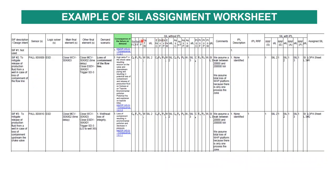The SIL assessment worksheet shows the sensor, logic solver, and final elements. The demand scenario comes from HAZOP. You put the risk graph here, input the consequences — whether disaster or catastrophic — exposure, whether avoidance is possible, the demand rate, and you arrive at a SIL. The same process applies for environment and production. You then look at independent layers of protection (IPL). Based on the protection layers available, you reduce the SIL level. Finally, you arrive at a certain SIL, and if it is SIL 3, you proceed to LOPA.